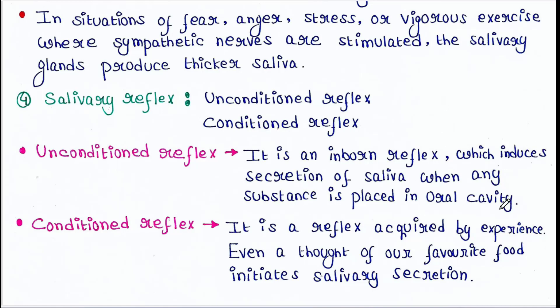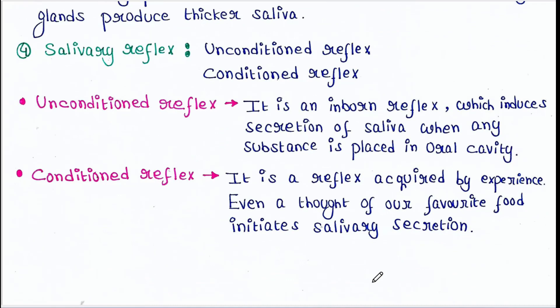The salivary reflex has two types: unconditioned reflex and conditioned reflex. The unconditioned reflex is an inborn reflex which induces secretion of saliva when any substance is placed in the oral cavity — for example, putting chocolate in our mouth triggers saliva release. The conditioned reflex occurs by experience — even just the thought of a favorite food such as ice cream initiates salivary secretion.